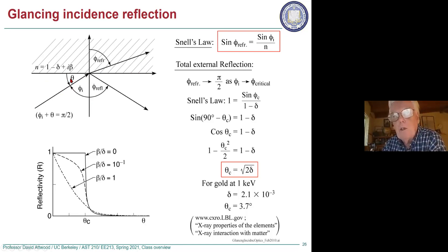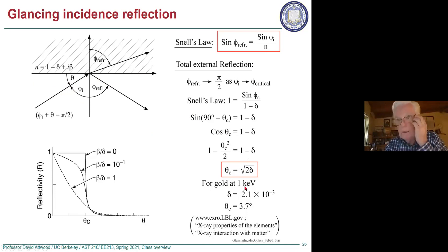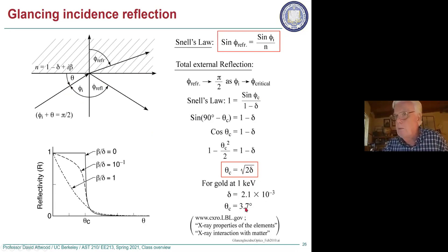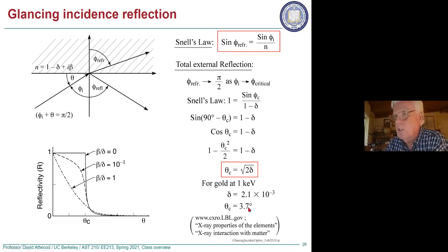For example at 1 keV soft X-rays, for a high-Z material like gold, the critical angle is about 3.7 degrees. For harder X-rays, delta drops quickly and the critical angle goes to much less than a degree. So we're already seeing phenomena commonly observed with X-rays — we'll go through these in more detail but you're getting an introduction.